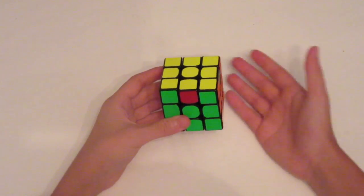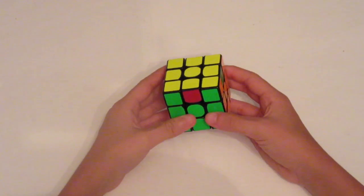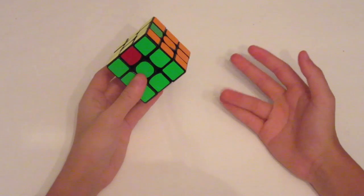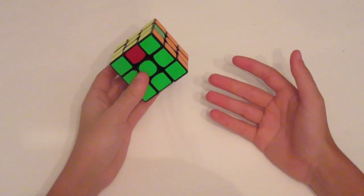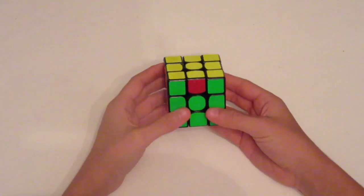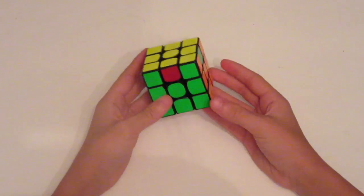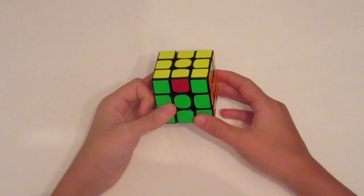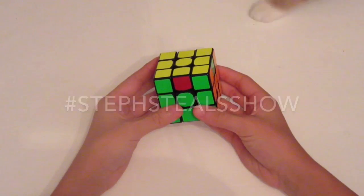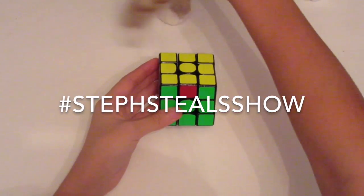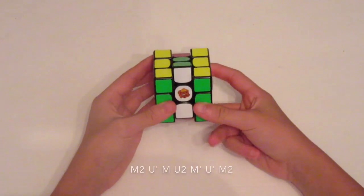So let's do U-A to start. If you do your M slices with your right hand like me, then this is the algorithm. I'll put it down below. So it's M2.